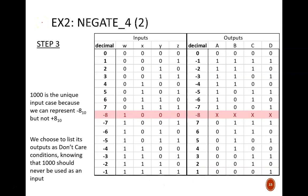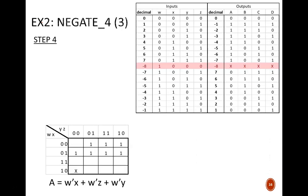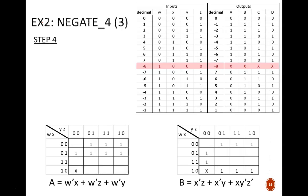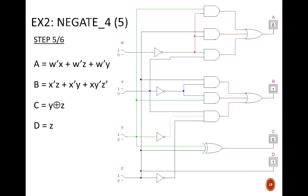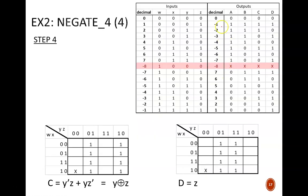You might remember that a couple lessons back, we designed a 4-bit negator following the formal design procedure. That device accomplishes the same thing as the current device, even though the internal circuit is different and the design approach differed. Back then, we began with a truth table and derived Boolean equations.